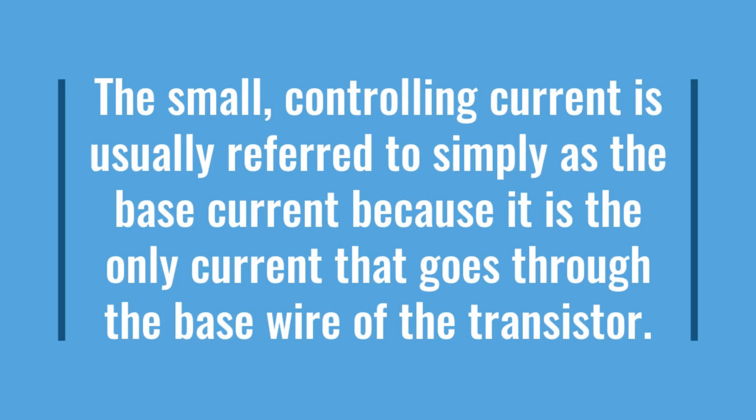The small controlling current is usually referred to simply as the base current because it is the only current that goes through the base wire of the transistor.